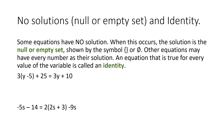Now, some equations may have no solution. When this occurs, the solution is the null or empty set, shown by the empty set symbol. Other equations may have every number as their solution — an equation that is true for every value of the variable is called an identity. Let's see what happens when we solve these next two: one is going to be an identity and one is going to be an empty set.